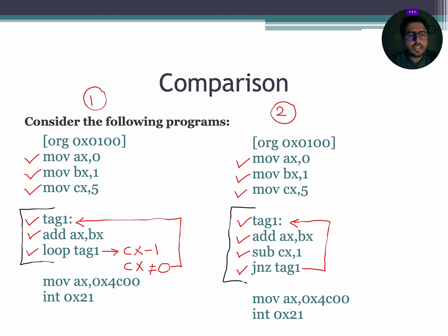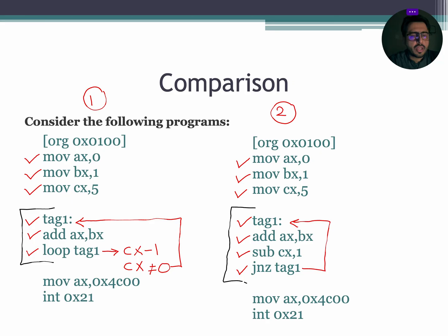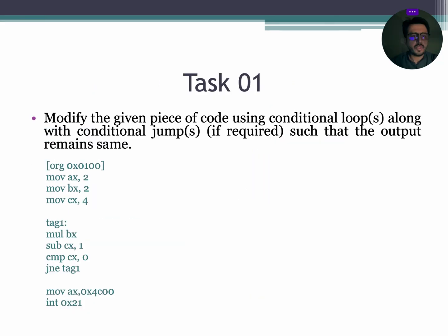As you can see, the outputs of both program 1 and program 2 are the same, even though program 1 is utilizing the LOOP instruction while program 2 is utilizing the JUMP instruction. This means we can convert loop instructions to jump instructions and jump instructions to loop instructions as per our preferences.